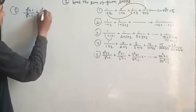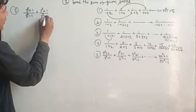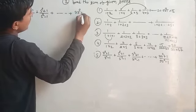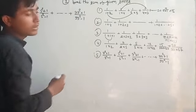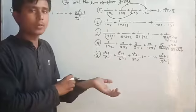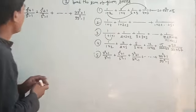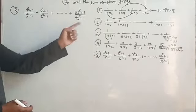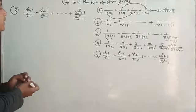Plus 5 square plus 1 upon 5 square minus 1, and this is your 99 square plus 1 upon 99 square minus 1. This question is quite easy. It looks a little difficult but is quite easy.